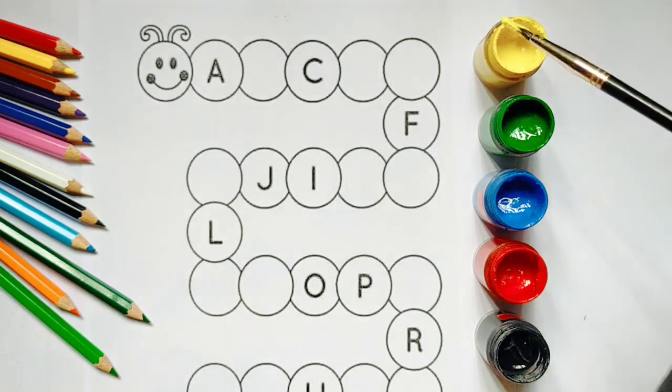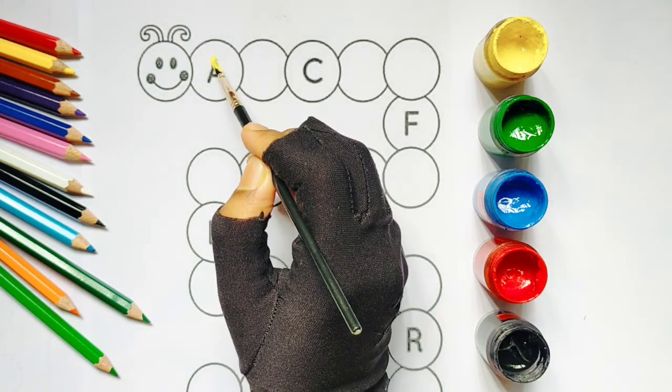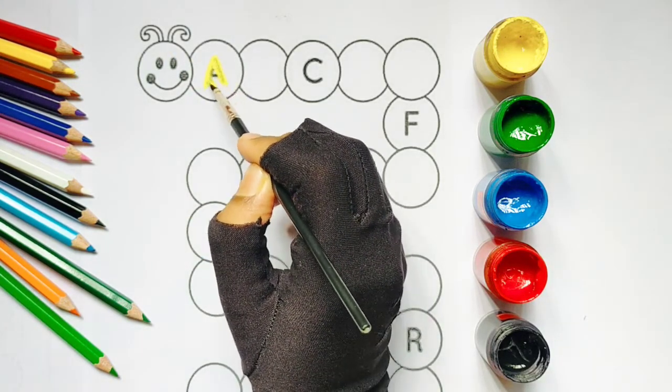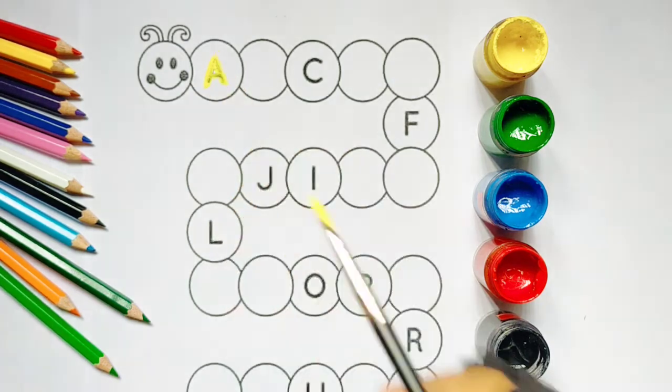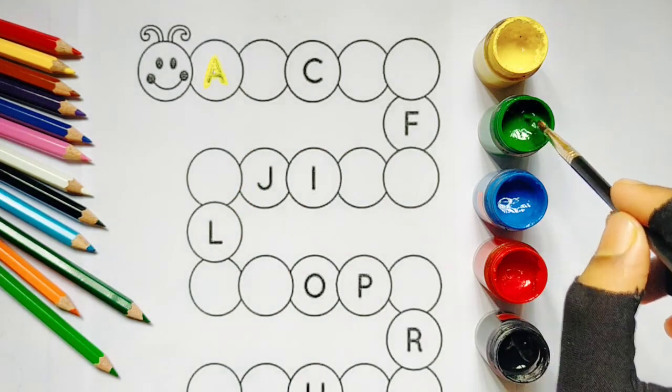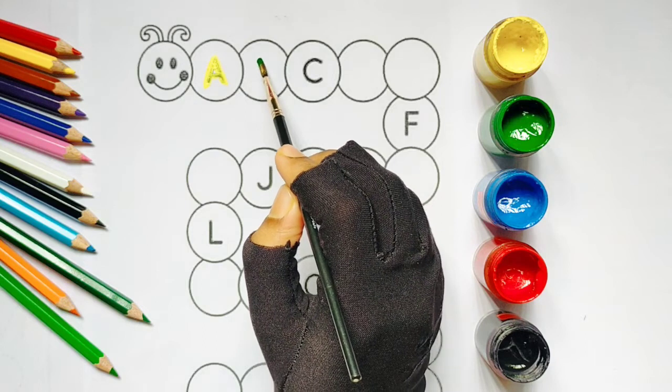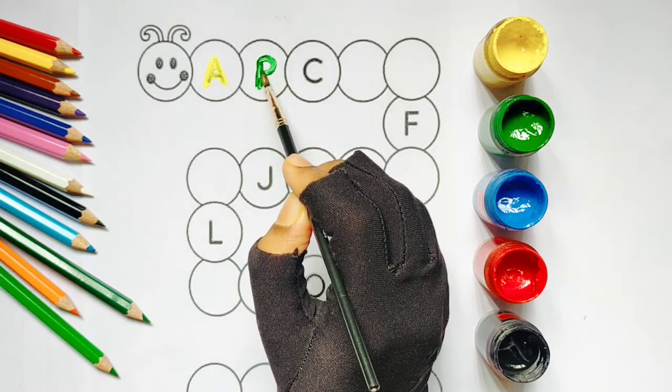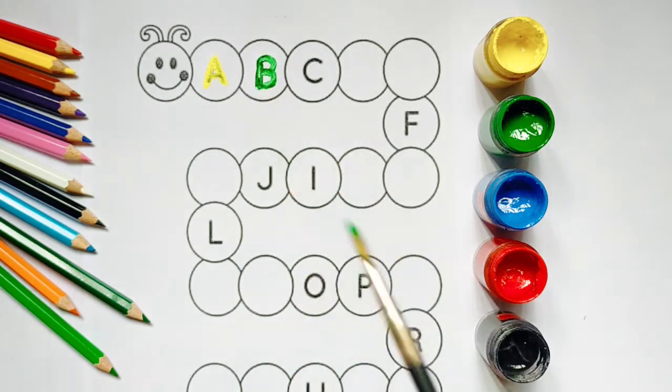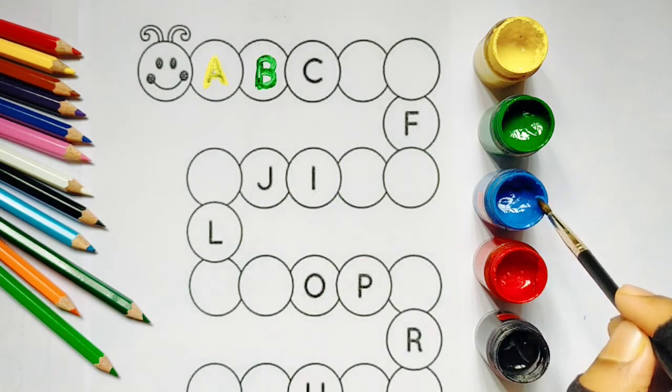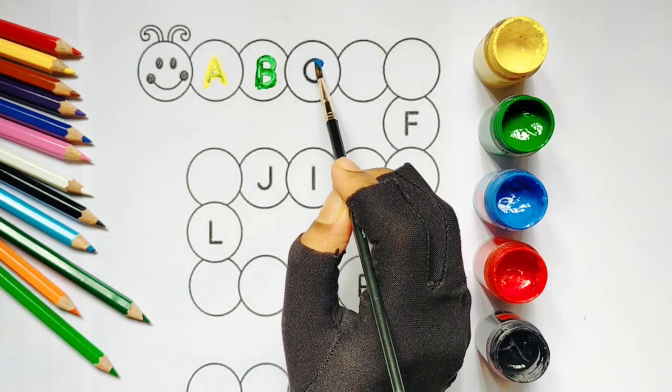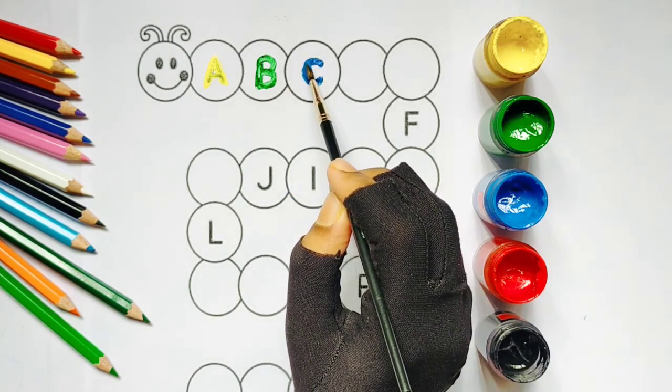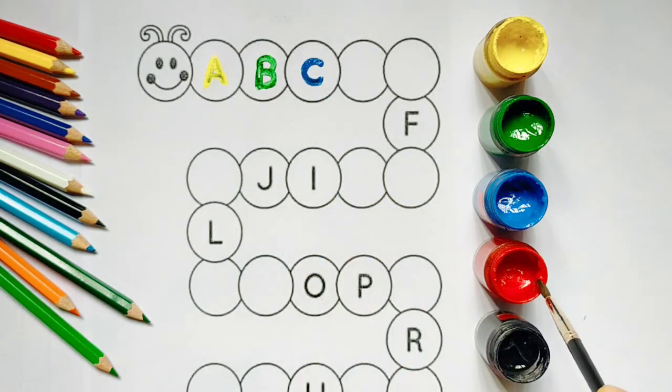Yellow color, yellow color A. A for ant. Green color, B. B for book. Blue color, C. C for cat.